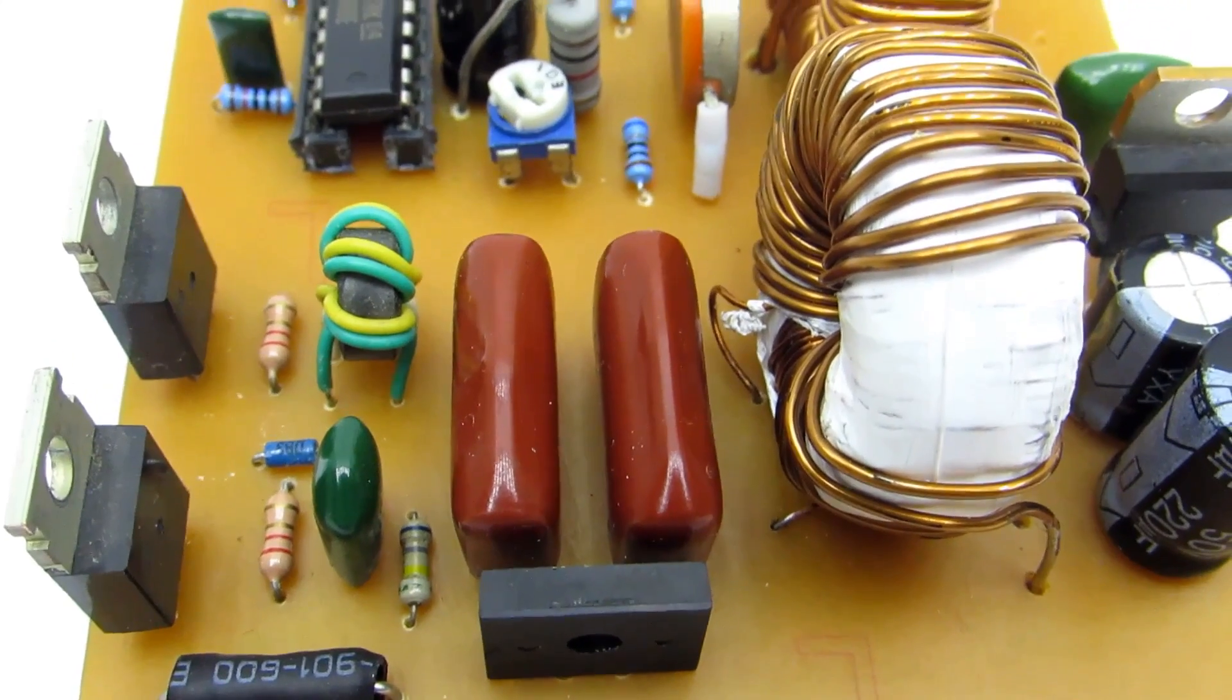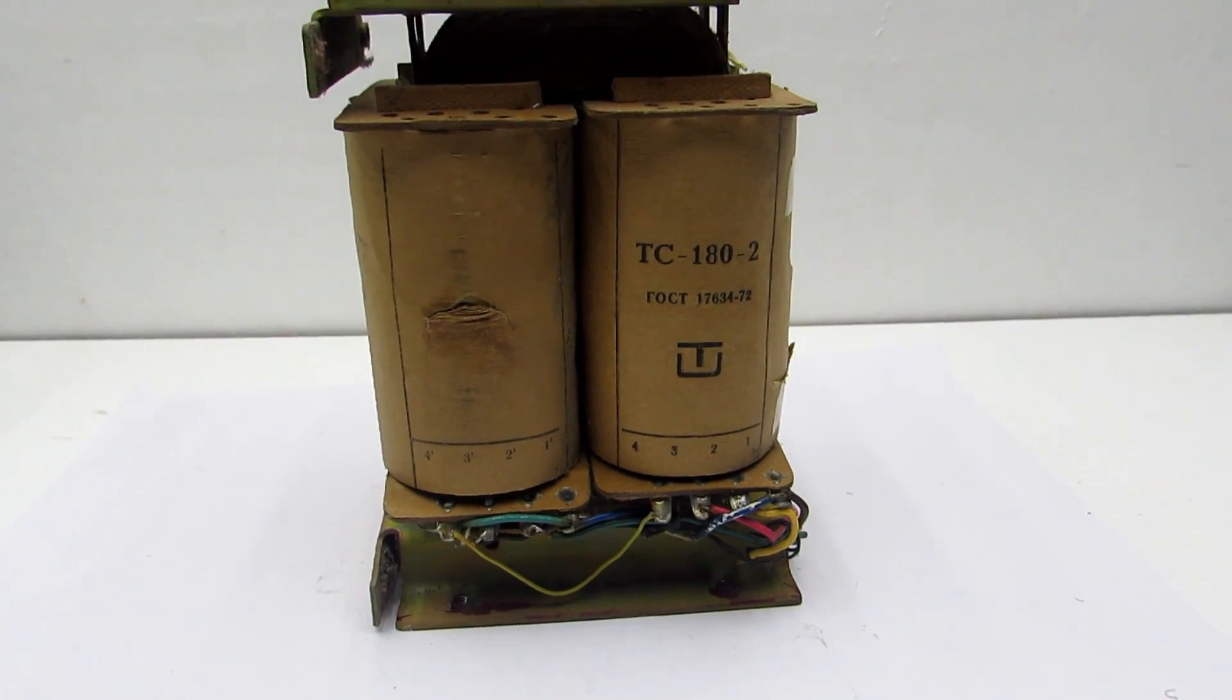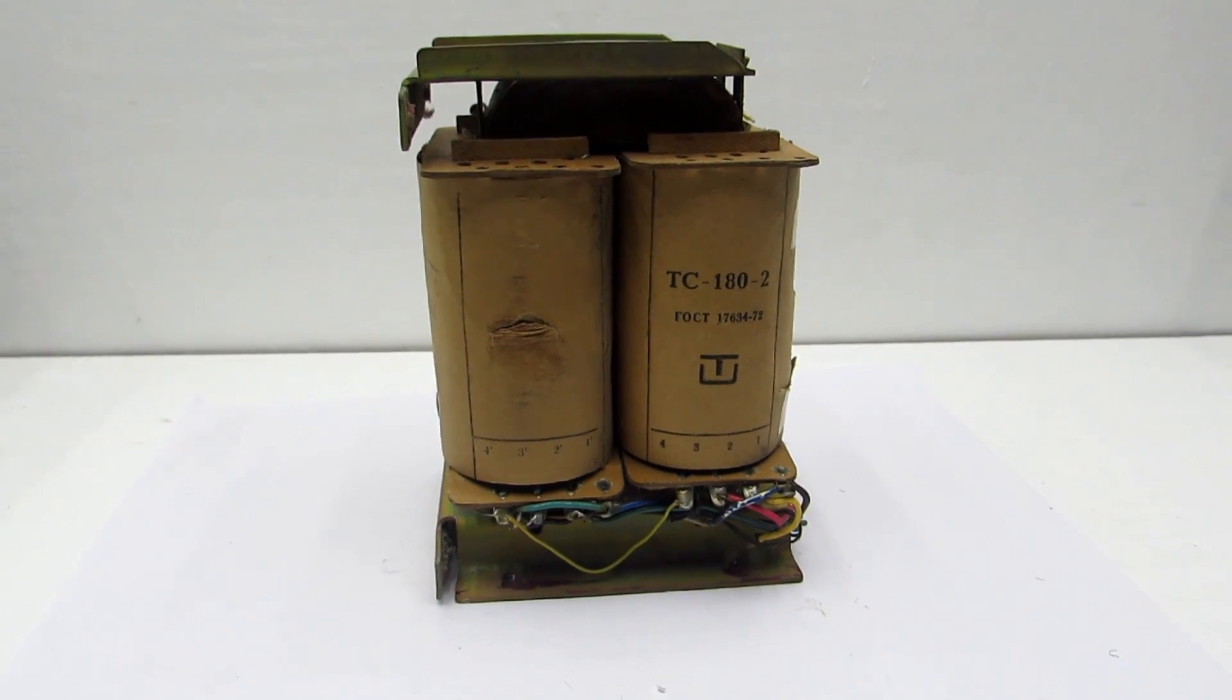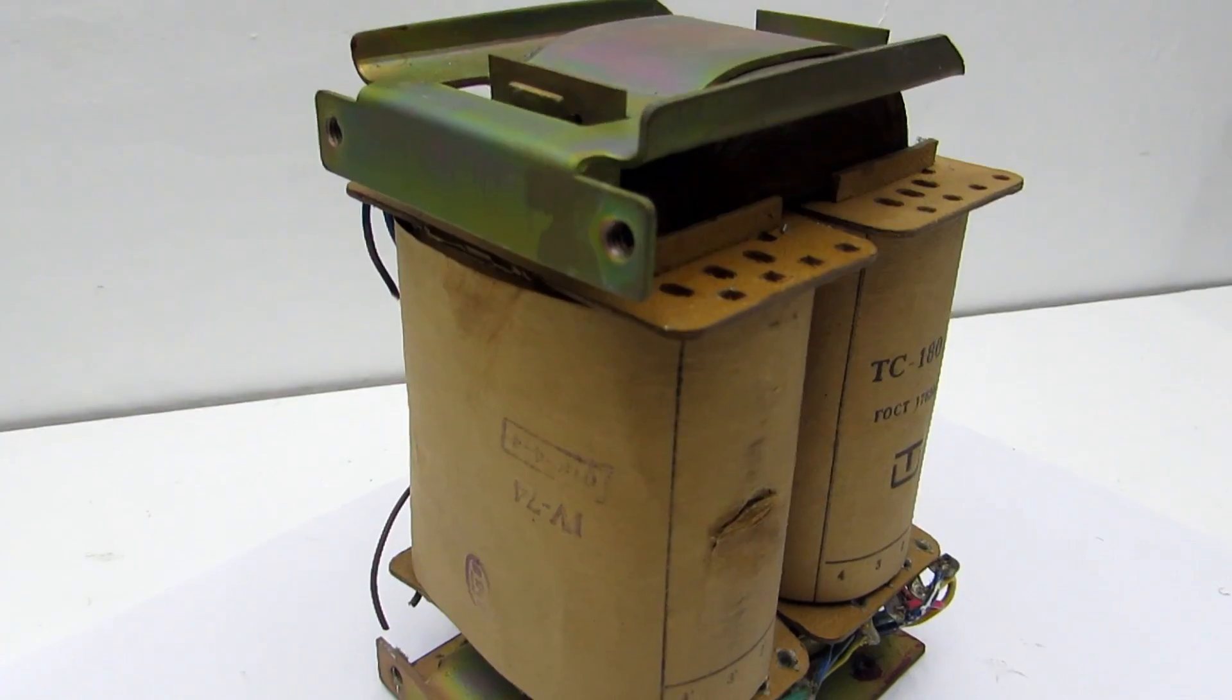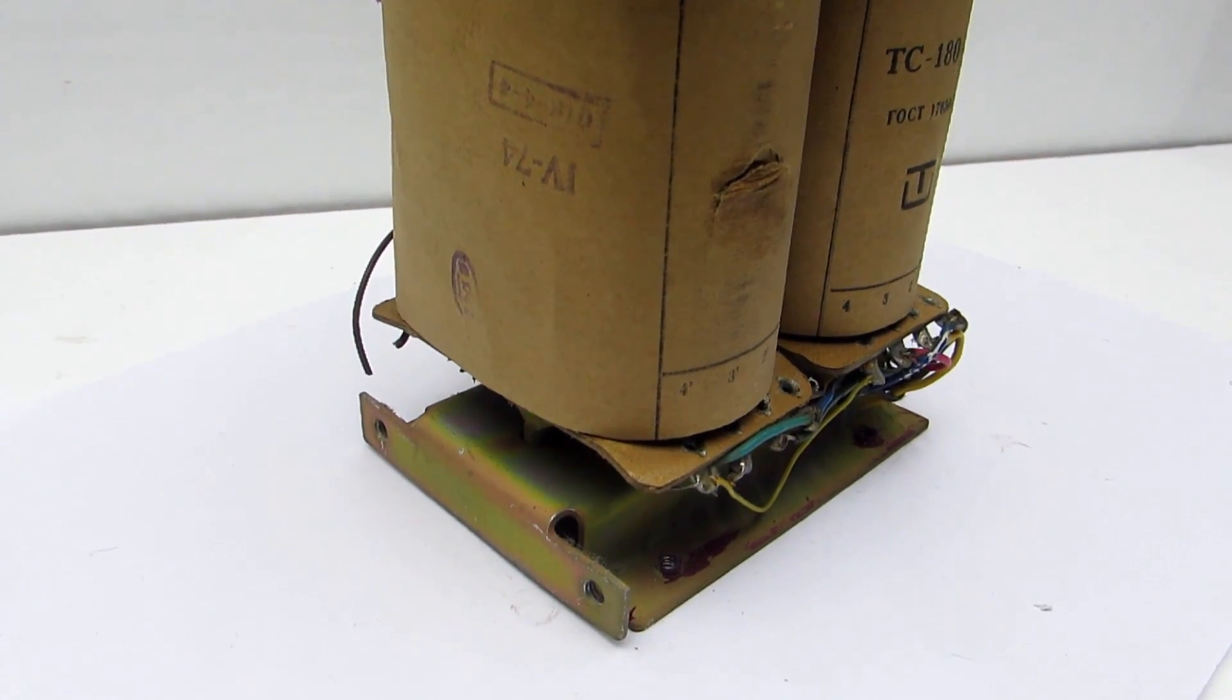As a power source can be switching power supply or mains transformer with rectifier and a smoothing capacitor. In both cases, a constant voltage power supply should be at least 16 to 17 volts and a current up to 10 amperes.